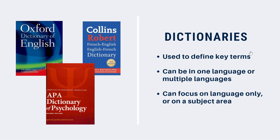There are also bilingual or translation dictionaries, which are used to translate words or phrases from one language to another. Finally, there are specialized or technical dictionaries. These focus on one topic or field of study, and they're useful for terms that are unique to a certain subject area. The library has a number of these, like Black's Law Dictionary, the APA Dictionary of Psychology, and more.